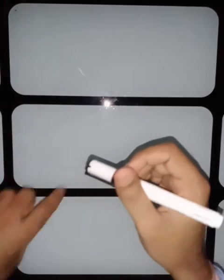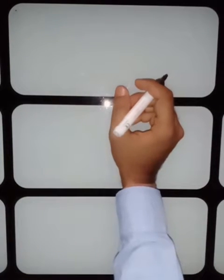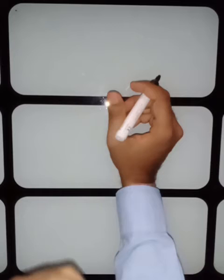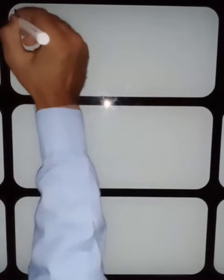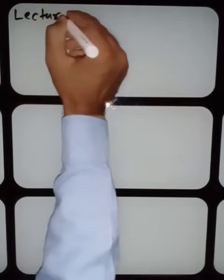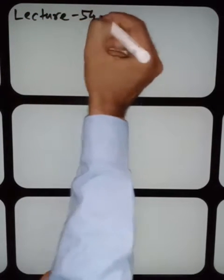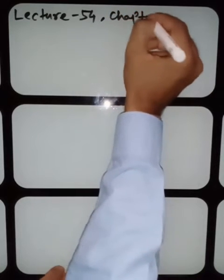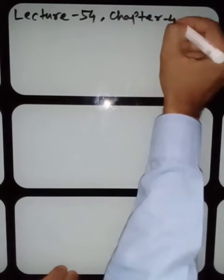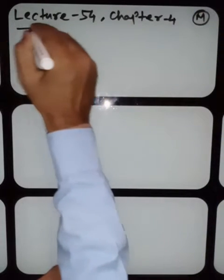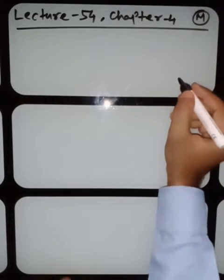Hello students. Today we are in lecture number 54 and we will start today with torque. If we place a current carrying conductor or loop inside a uniform magnetic field, it experiences a torque that we will study today. This is from Chapter 4, Moving Charges and Magnetism.